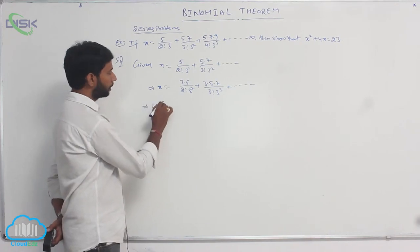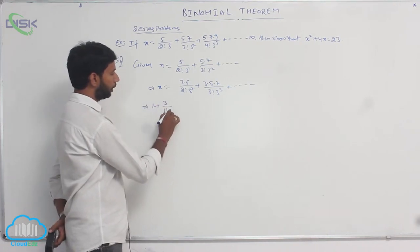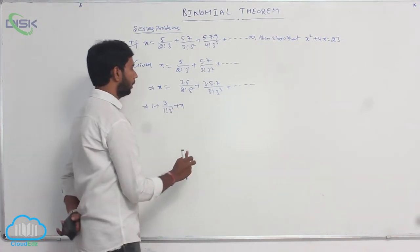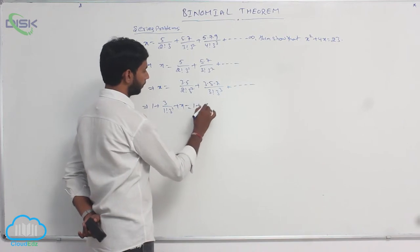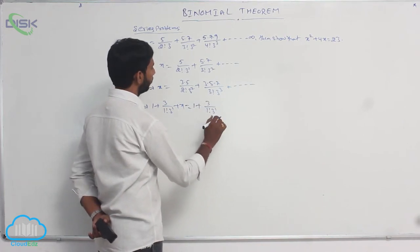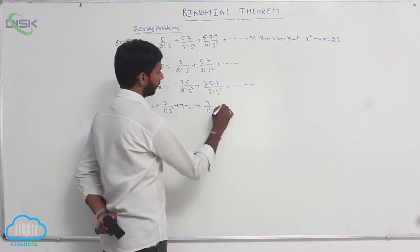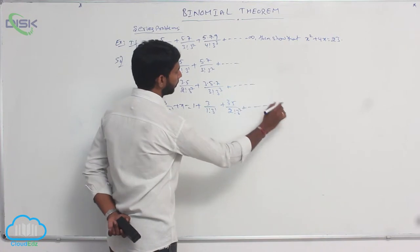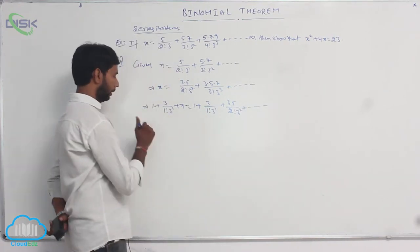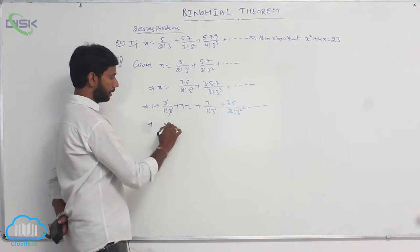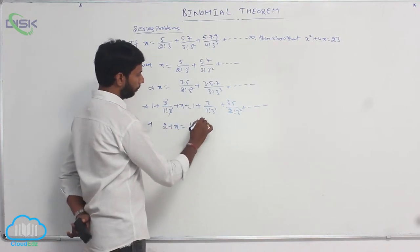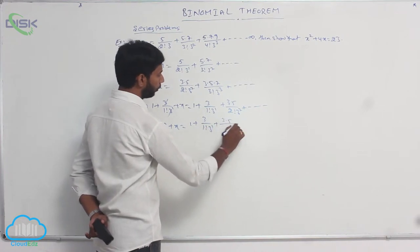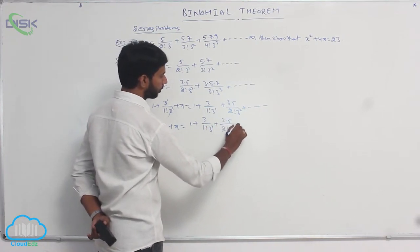Adding 1 plus 3 by 1 factorial into 3 to the power 1 on both sides: 1 plus 3 by 1 factorial into 3 to the power 1, plus 3 into 5 by 2 factorial into 3 squared, and so on. Here 3 and 3 get cancelled, giving 2 plus x equals 1 plus 3 by 1 factorial into 3 to the power 1, plus 3 into 5 by 2 factorial into 3 squared, and so on.